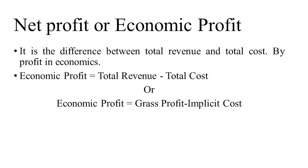Net profit or economic profit can be calculated as: Total Revenue minus Total Cost, where total cost includes both implicit cost and explicit cost. Alternatively, Economic Profit = Gross Profit minus Implicit Cost. The constituents of implicit cost are: reward for taking risk, reward for bearing uncertainties, reward for abilities, monopoly gains, and reward for innovations.